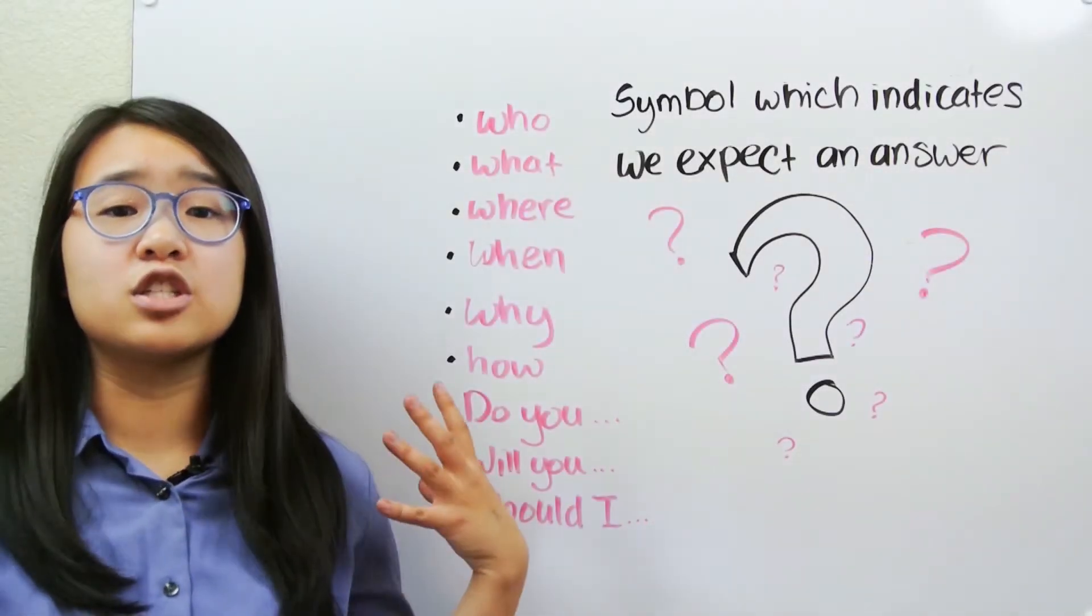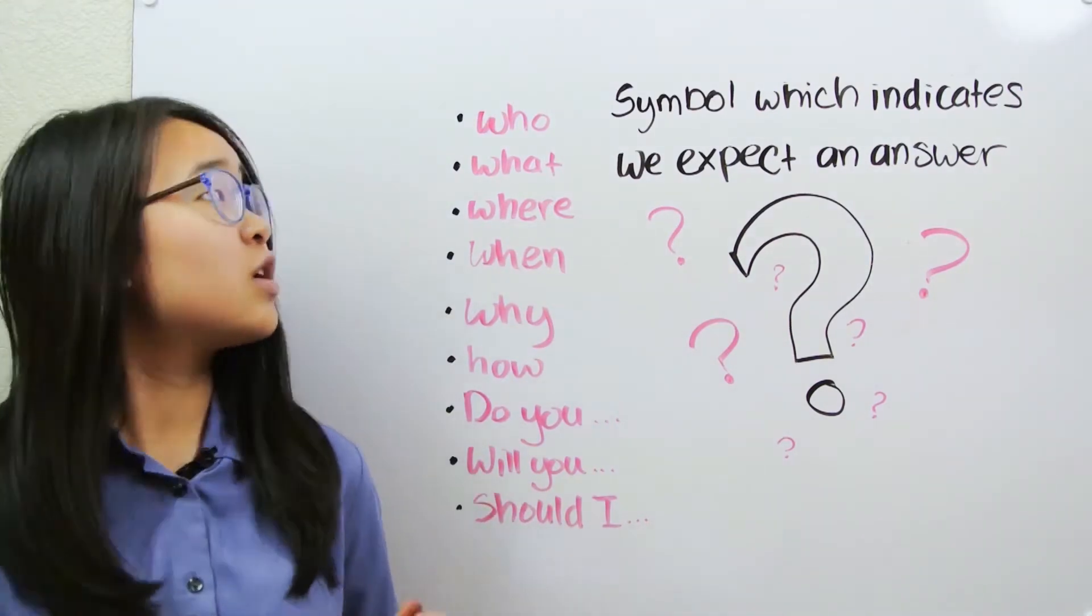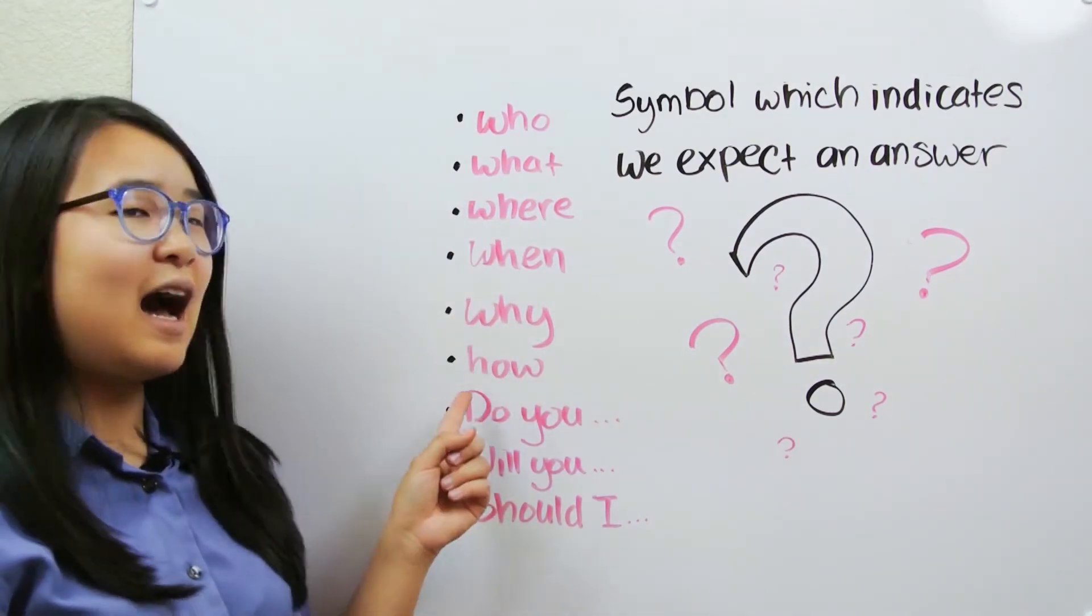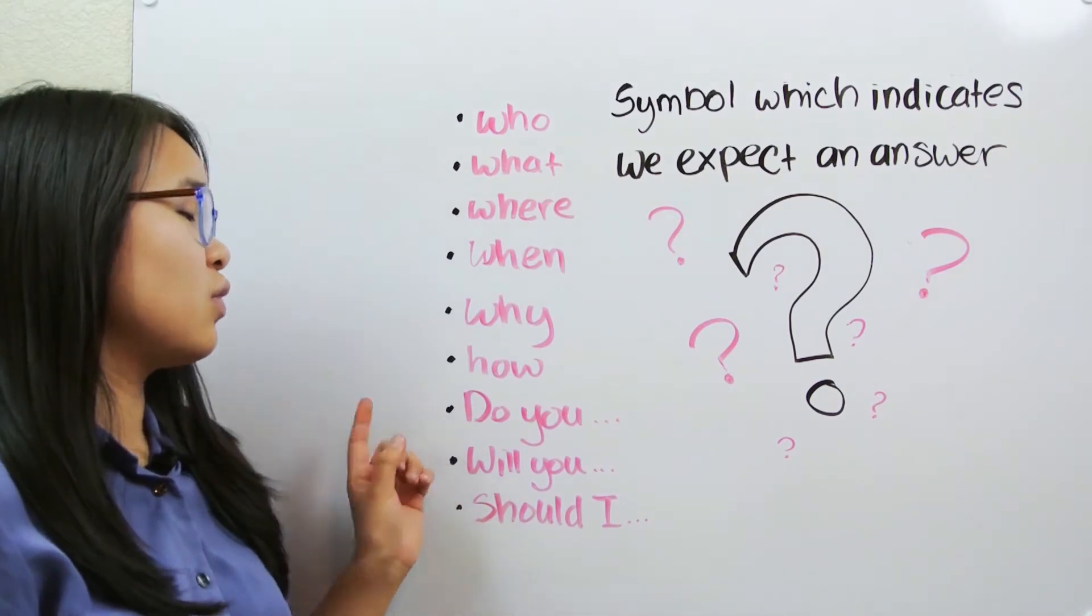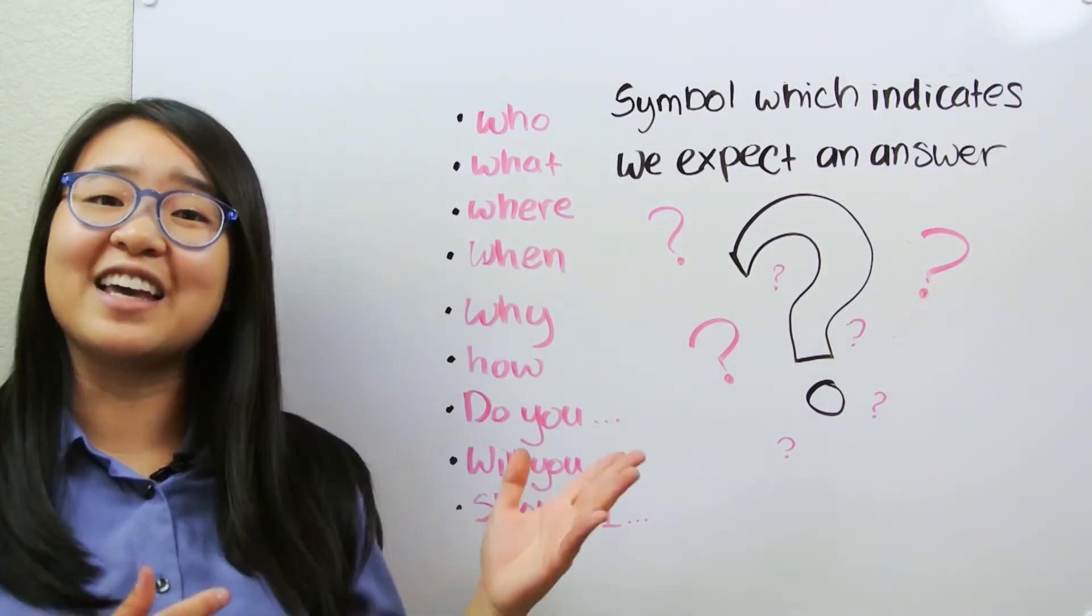Here's a tip about when to use the question mark at the end of a sentence. Questions often begin with the words who, what, where, when, why, how, but sometimes they also begin with do you, will you, should I, and some other question starters like these.